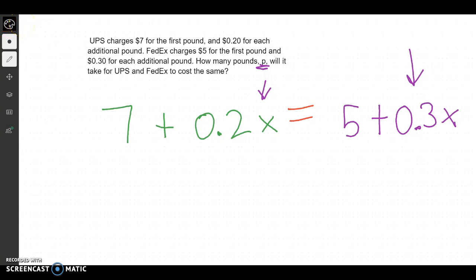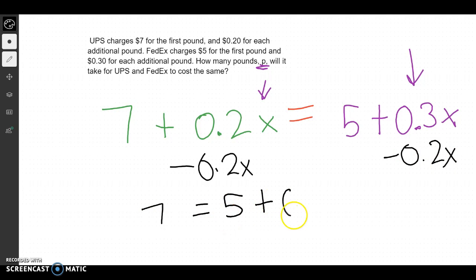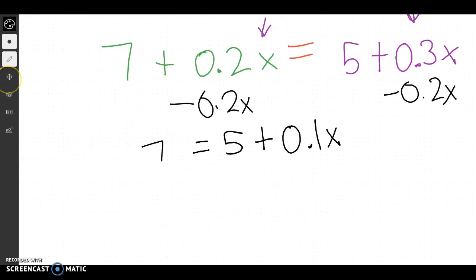Again, I'm going to try to get both variables on the same side. So let me take this .2 and move it over. Then I should have 7 equals 5 plus 0.1x. Then after I got that over, let's get our numbers over. So minus 5, minus 5. And I'll have 2 equals 0.1x.